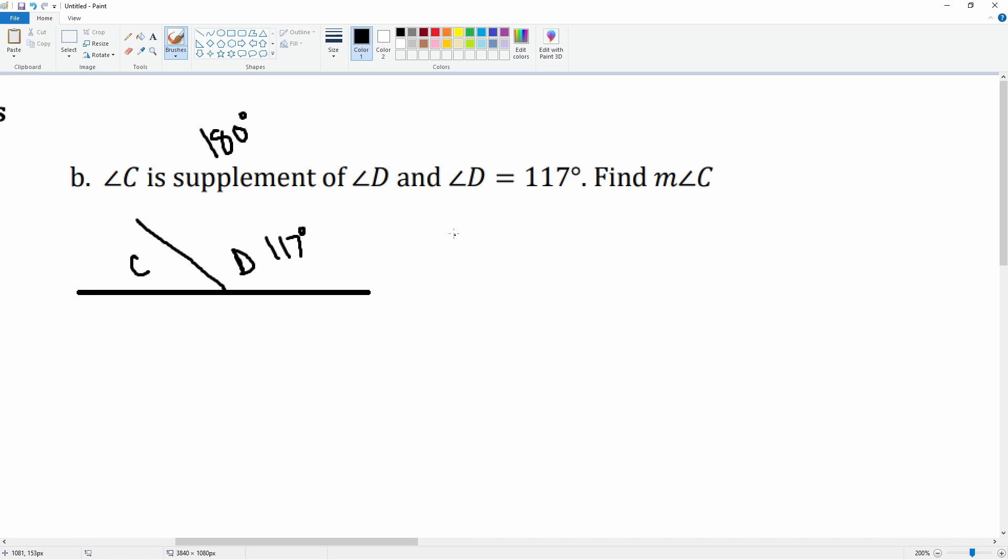So we can write angle C plus angle D has to be supplementary, which is add up to 180. We don't know what angle C is, but we know that angle D is 117. That together adds up to 180.